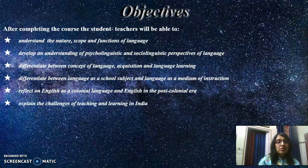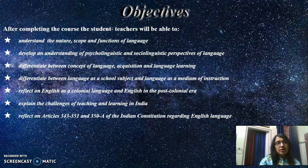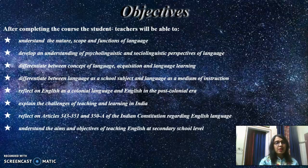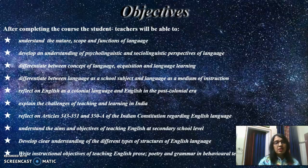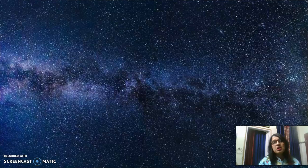Then reflect on English as a colonial language and English in the postcolonial era. They will be able to explain the challenges of teaching and learning in India. Then reflect on articles 343 through 351 and 350A of the Indian constitution regarding English language. Then they will be able to understand the aims and objectives of teaching English at secondary school level. They will be able to develop clear understanding of the different types of structures of English language. And then at last, they will be able to write instructional objectives of teaching English prose, poetry and grammar in behavioral terms.